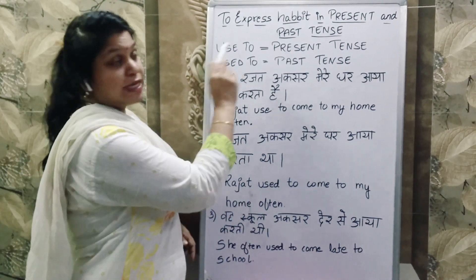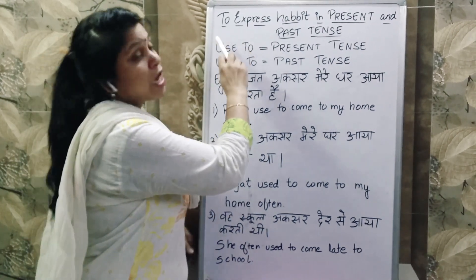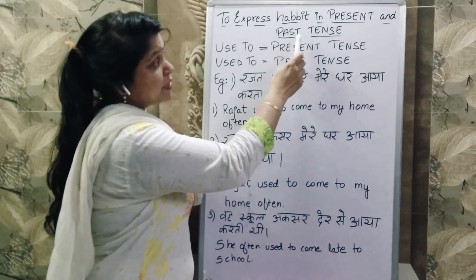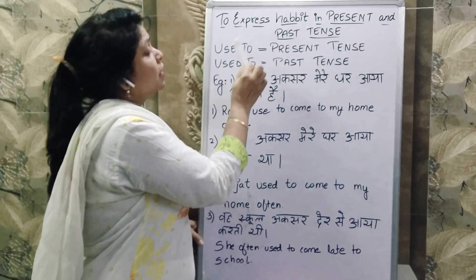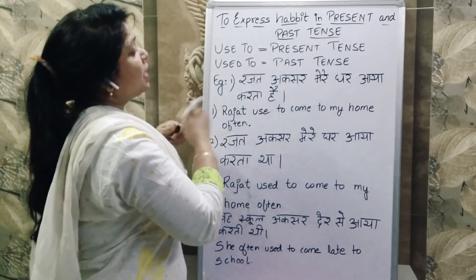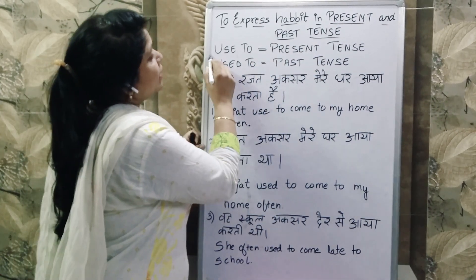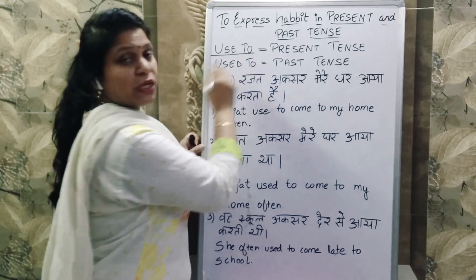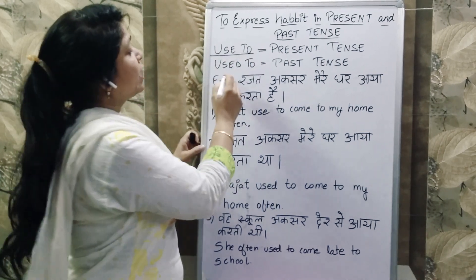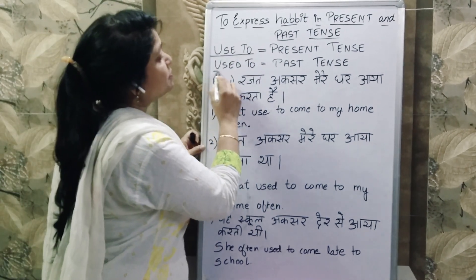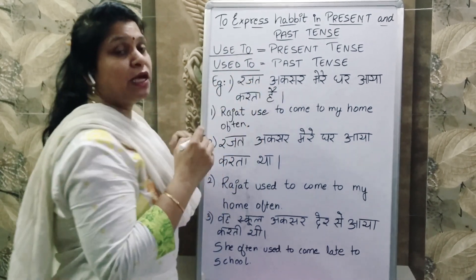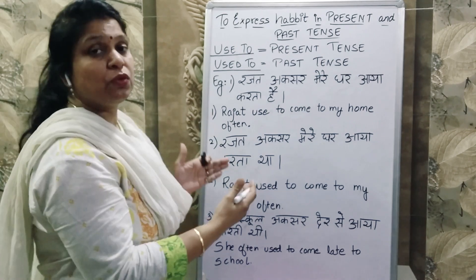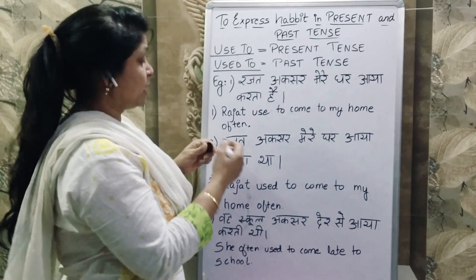So let's start with how to express habit in present and past tense. Present tense me 'used to' ka use kiya jata hai aur past tense me bhi 'used to' ka, taa ki hum apni aadat ko show kar sakhi.